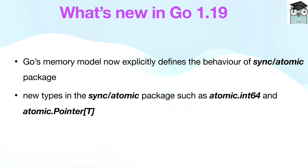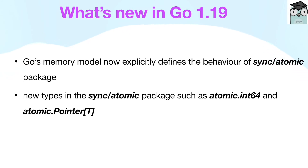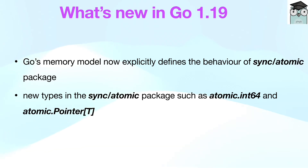Go's memory model now explicitly defines the behavior of the sync/atomic package. The formal definition of the happens-before relation has been revised to align with the memory models used by C, C++, Java, JavaScript, Rust, and Swift. Nevertheless, existing programs are unaffected by this change. Along with the memory model update, there are new types in the sync/atomic package such as atomic.Int64 and atomic.Pointer, a generic pointer, to make it easier to use atomic values.